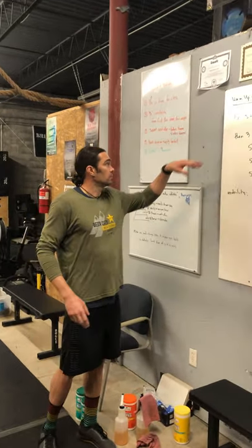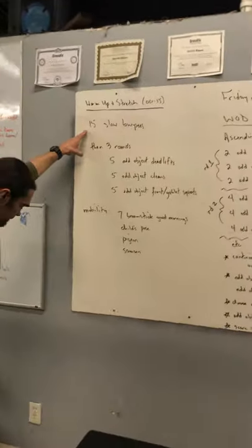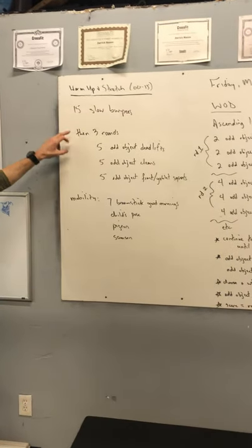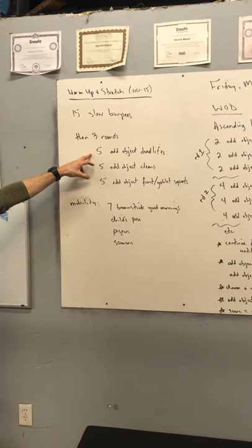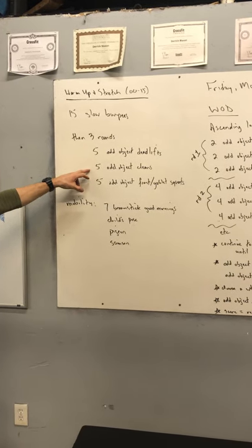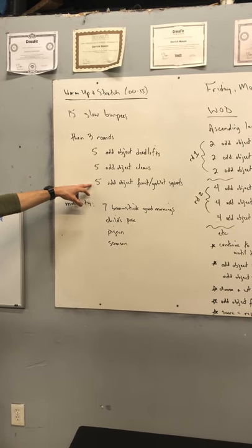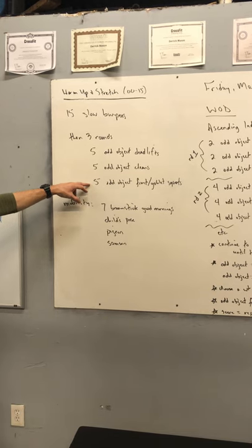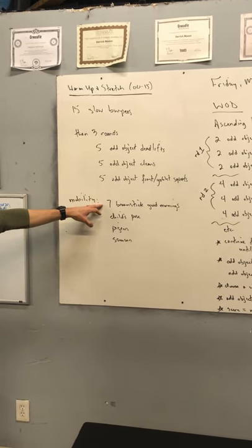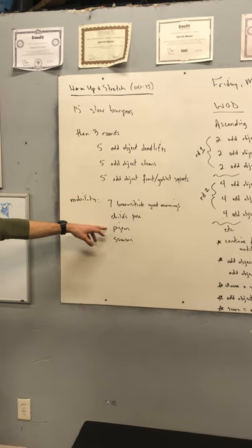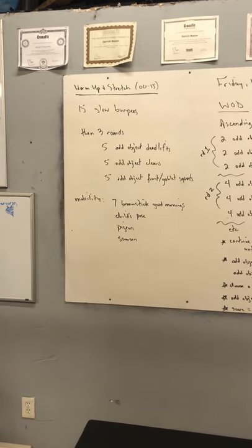Starting off with your warm-up, we'll go with 15 slow burpees just to get you moving and get your heart rate up. Then three rounds: five deadlifts, five cleans, and five front or goblet squats with whatever odd object you're using. For mobility, do seven broomstick good mornings, child's pose, pigeon, and Samson stretch.